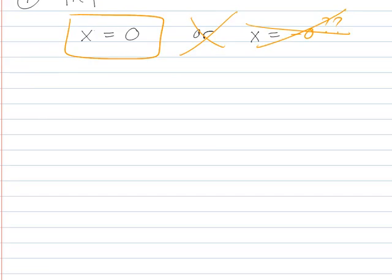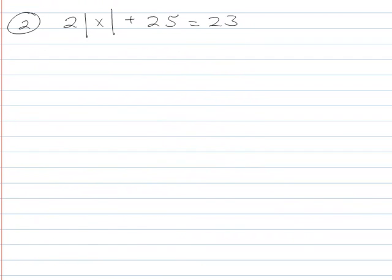So that was fun and fast. Now this problem is only tricky because you have to remember to isolate the absolute value. So we want to get the absolute value term by itself. So my first step is going to be to subtract 25 from both sides. So I have 2 times the absolute value of x is equal to negative 2.